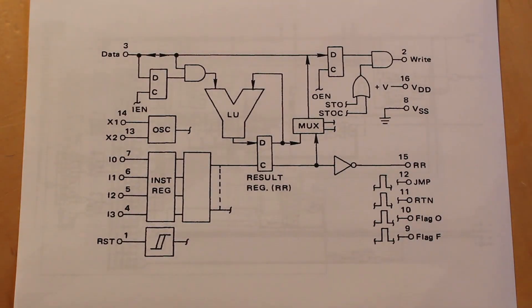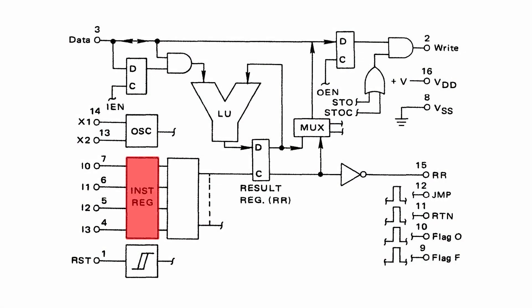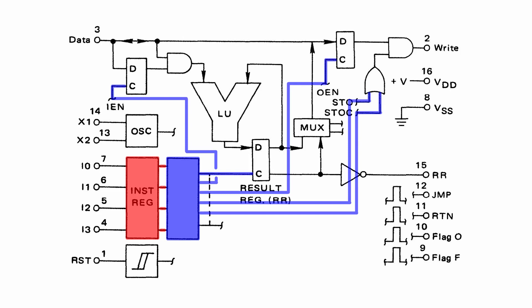Before we can start building the decoder, we need to take a look at what it actually does. This is the block diagram for the MC14500, which is the chip that we're trying to replicate with vacuum tubes. So far, we've just built the instruction register, which isn't actually all that much. The decoder is going to be this mystery box on the other side of the instruction register, and what it does is take the 4-bits stored in the instruction register and break them out into 16 individual control lines, each controlling a different aspect of the system.